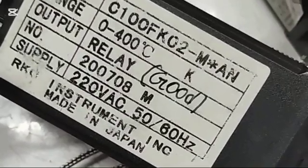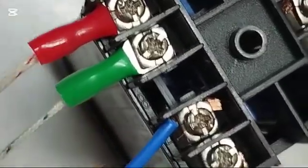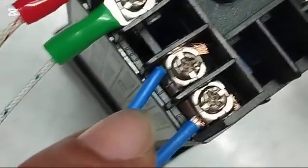This is relay type temperature controller. We connect temperature sensor thermocouple with 10 and 9. 10 positive, 9 negative. Alarm switch connection with 6, 7. Relay out 3, 4, 5. 3 is common, 5 and 3 NC, 3, 4 NO relay out.